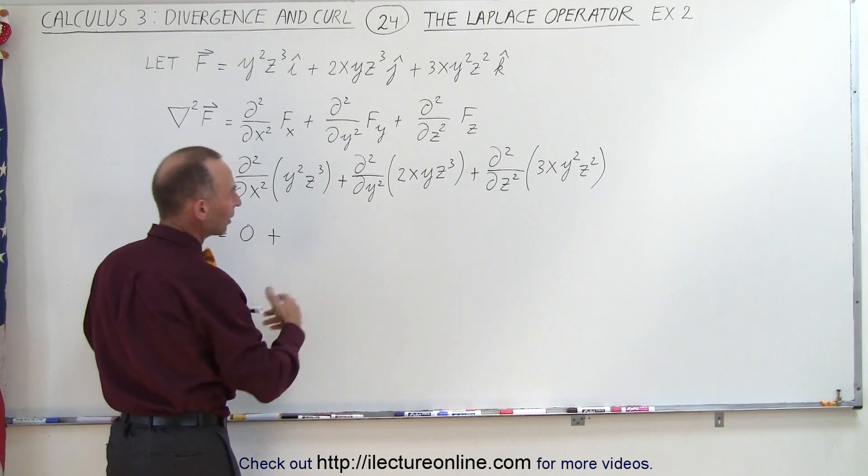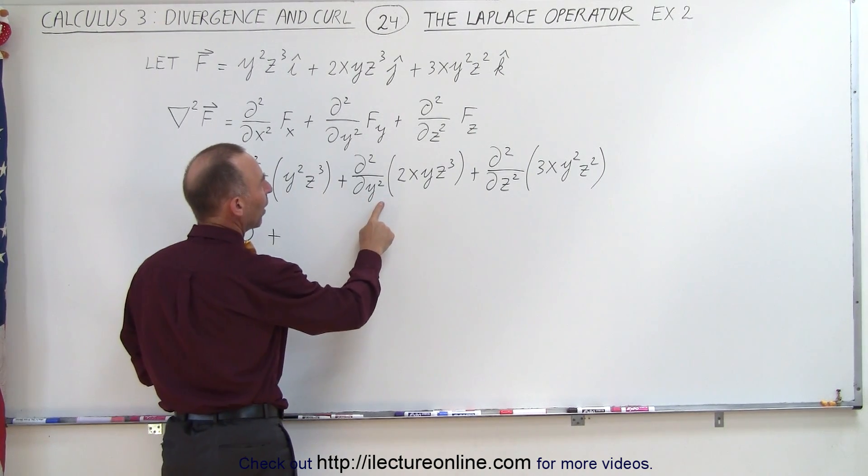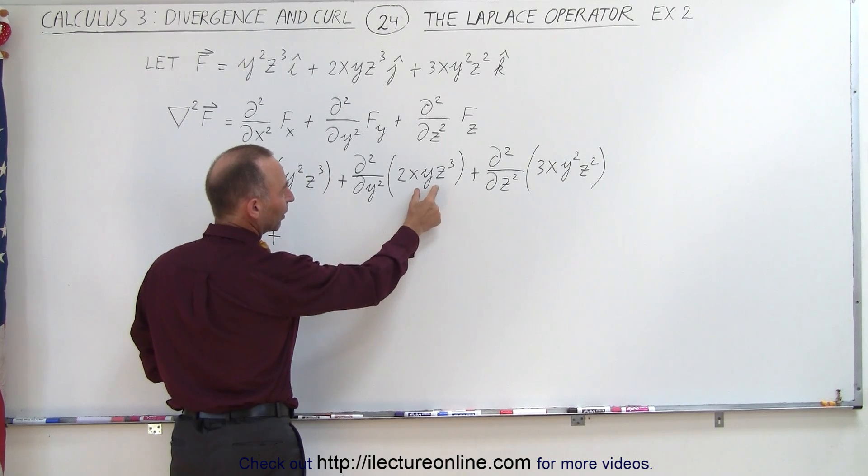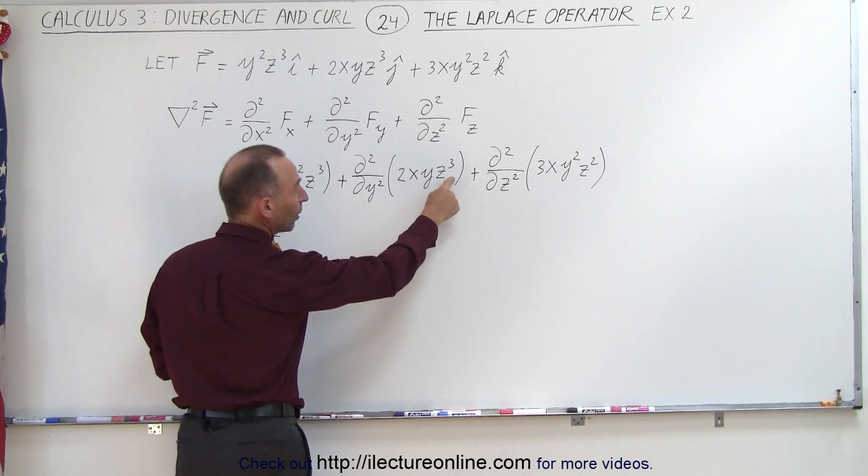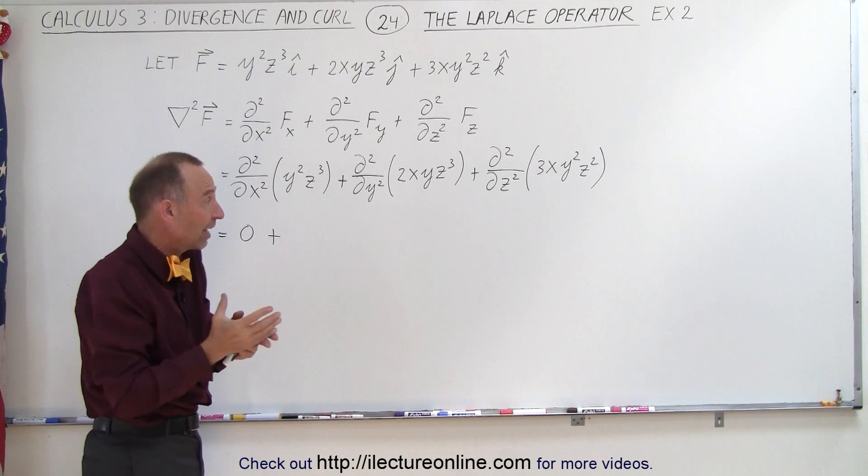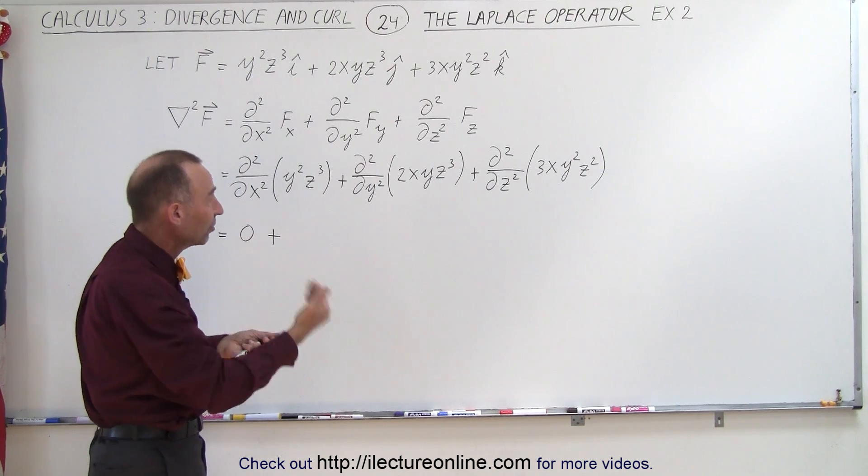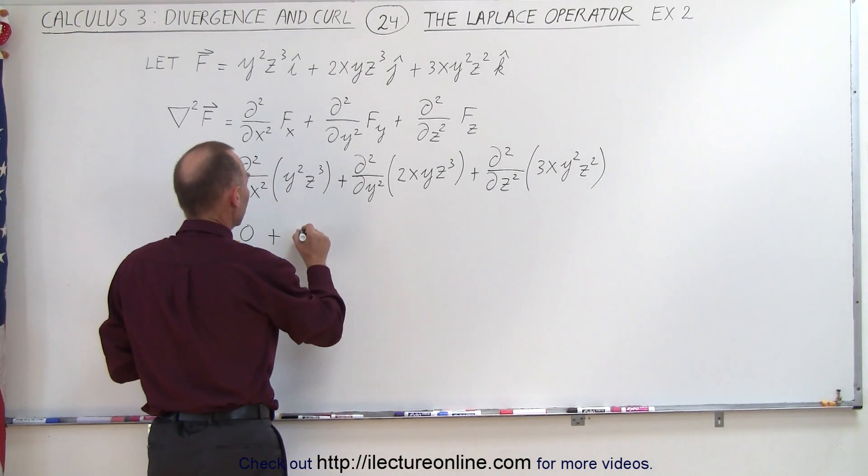Plus, here we're taking the partial derivative with respect to y. We have a y in there. So the first derivative gives us 2xz cubed. But then since the first derivative doesn't have a y in it anymore, when we take the second derivative, that also goes to 0.